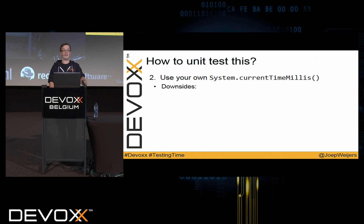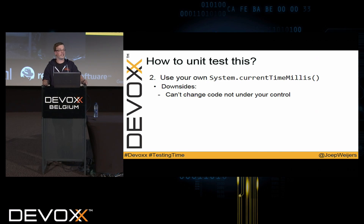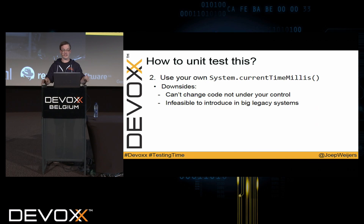This has some downsides. The obvious one is that you have to change your code to pass that clock everywhere, or dependency inject it. That's a real problem if you have code not under your control. For example, the Java util Date constructor uses System.currentTimeMillis internally, so if you use Date you can't override it. Another example is Google Guava's cache, which might be an option to implement login attempts — it uses nano-time internally, not the clock. At Topdesk we have a very big legacy application we still have to maintain, and it's infeasible to change System.currentTimeMillis everywhere across all dependencies, so we had to come up with our own solution.